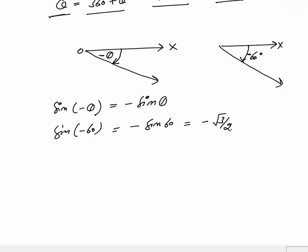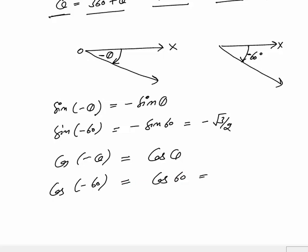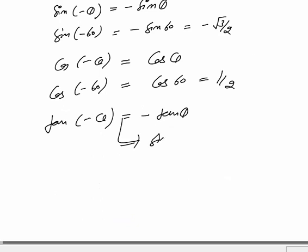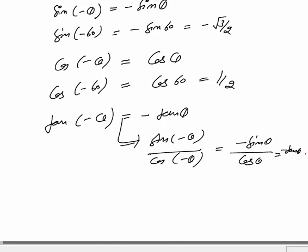What about cos? Cos of minus theta is equal to cos theta — it is positive. So cos minus 60 degrees is equal to cos 60 degrees, that is one half. For tan of minus theta, either you can simply write that this is equal to minus tan theta, or you can also write that this is sine of minus theta upon cos of minus theta, which gives minus sine theta over cos theta — again minus tan theta.